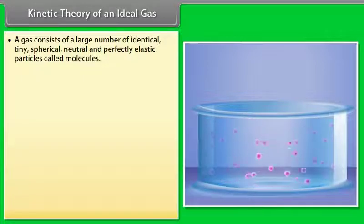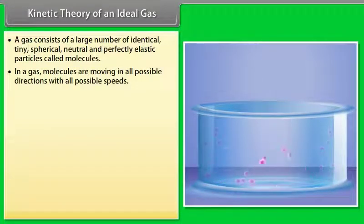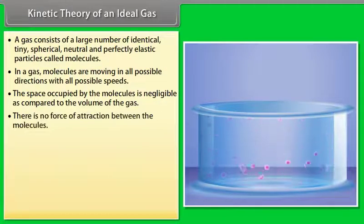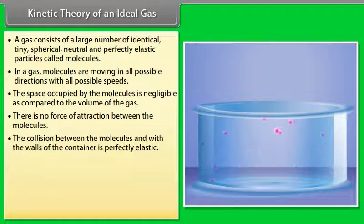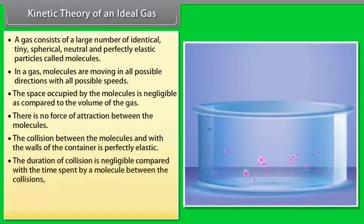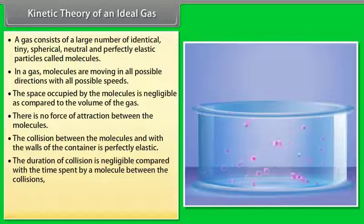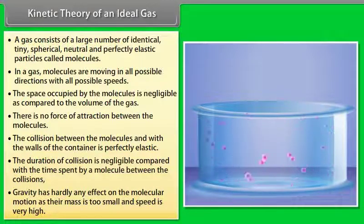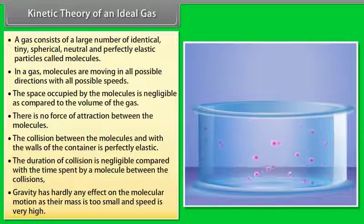A gas consists of a large number of identical, tiny, spherical, neutral and perfectly elastic particles called molecules. In a gas, molecules are moving in all possible directions with all possible speeds. The space occupied by the molecules is negligible as compared to the volume of the gas. There is no force of attraction between the molecules. The collision between the molecules and with the walls of the container is perfectly elastic. The duration of collision is negligible compared with the time spent by a molecule between the collisions. Gravity has hardly any effect on the molecular motion as their mass is too small and speed is very high.